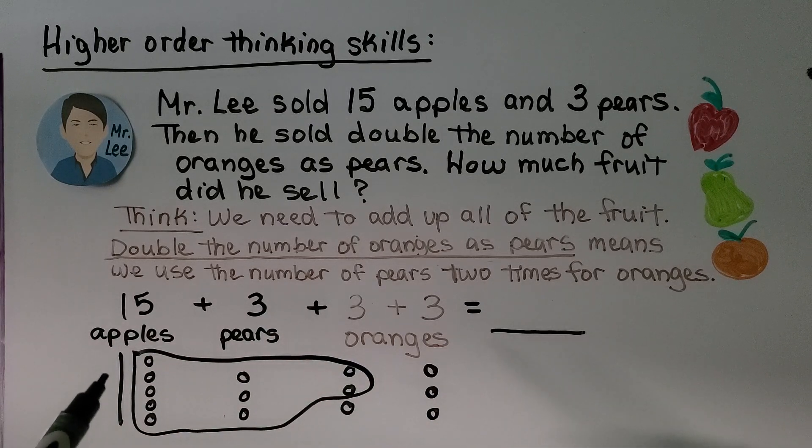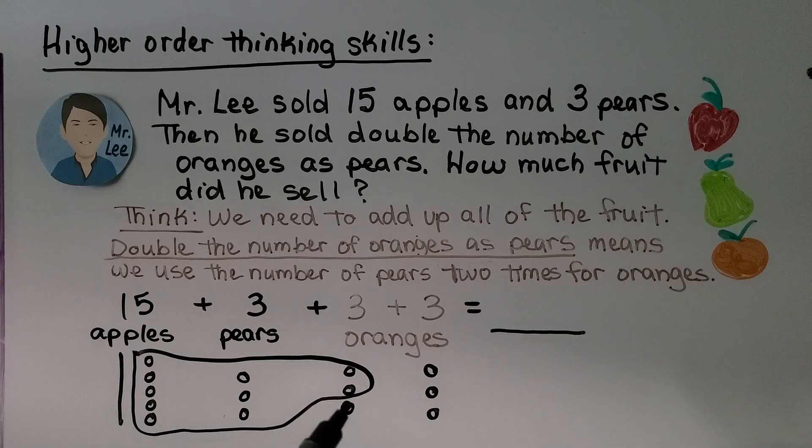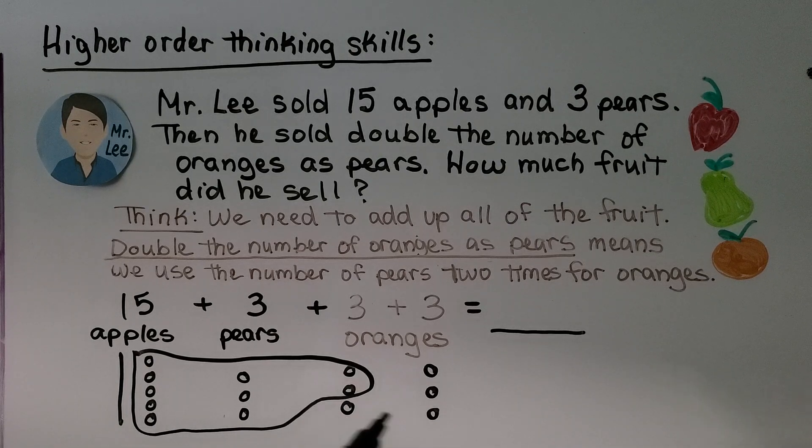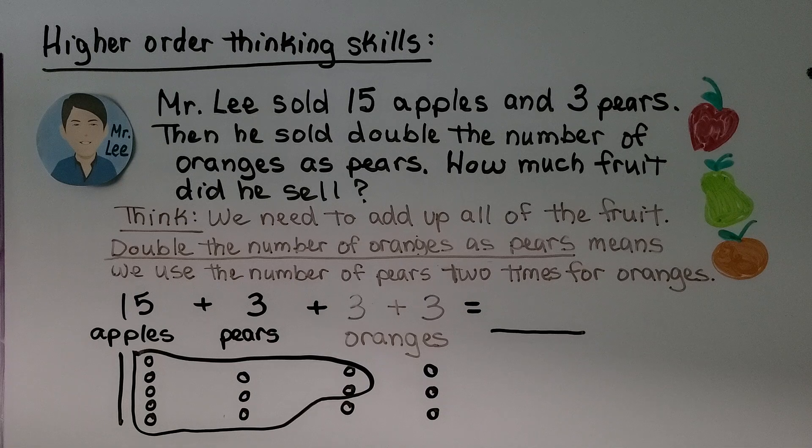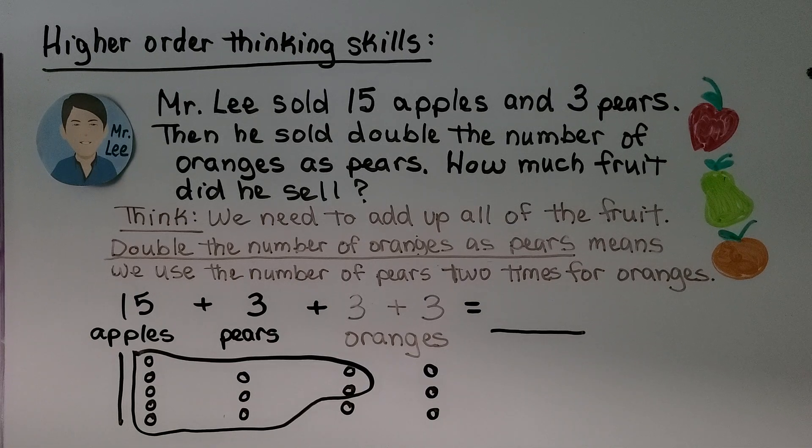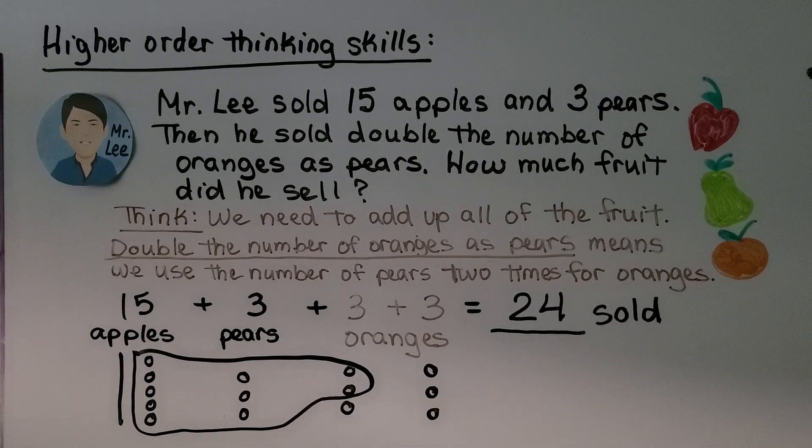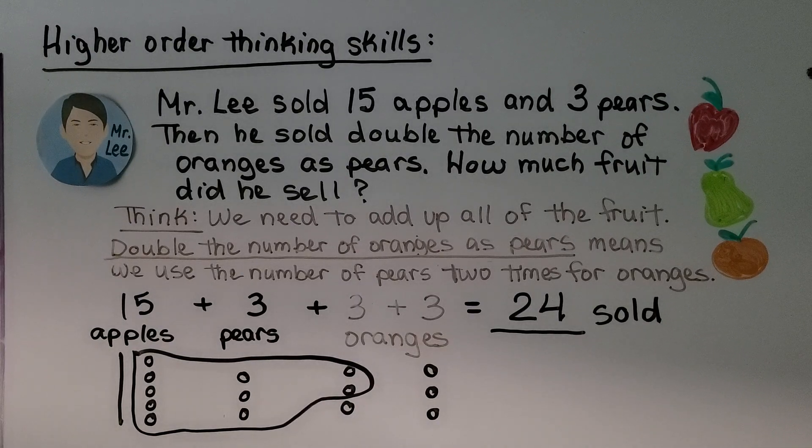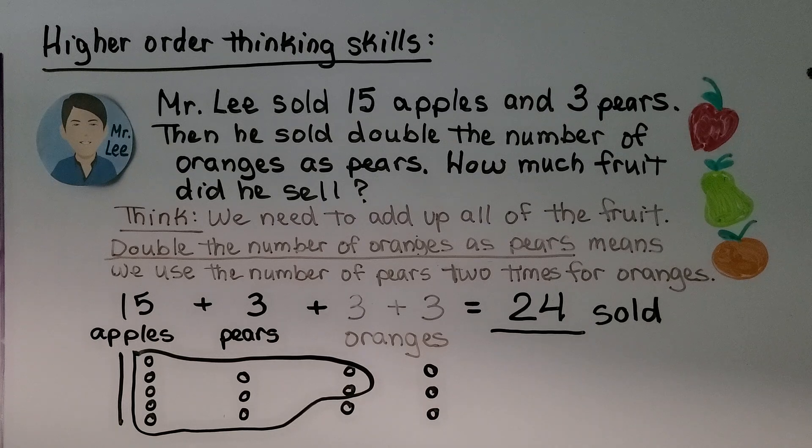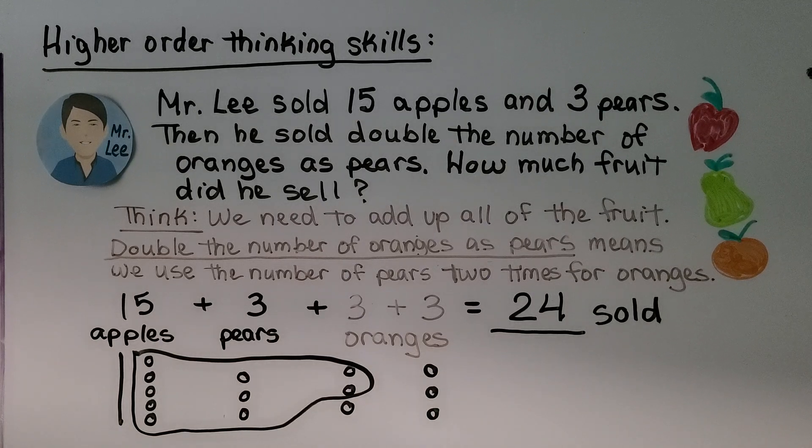So we've got 1 ten, 2 tens and 4 ones left over. Do you know how much that is? If you said 24, you're right. And we label it that it's how much was sold. We could also say 24 fruit sold.